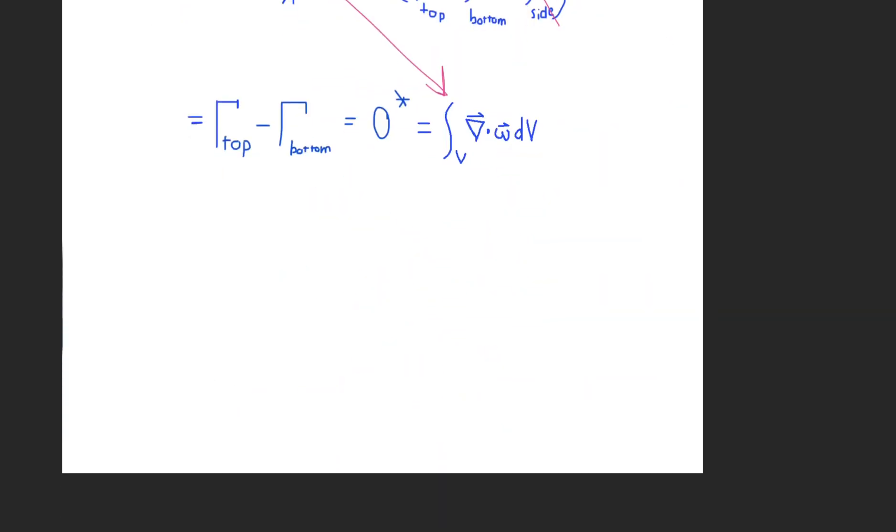And so the thing is that the vorticity is equivalent to the curl of the velocity vector. And so what we're taking here is actually the divergence of a curl. And we know that the divergence of the curl equals zero.